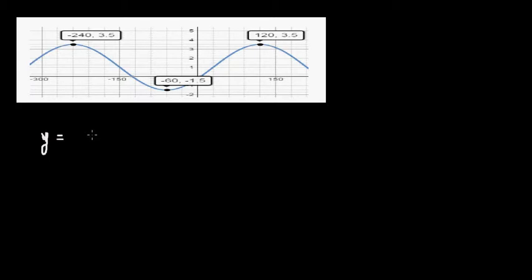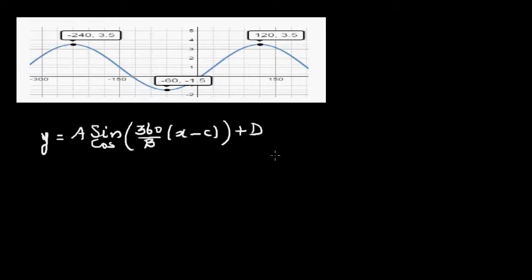Let's write the equation of a trig graph — a sine or a cosine graph. The general formula is y equals a times sine or cosine times 360 divided by b, times x minus c, plus d.